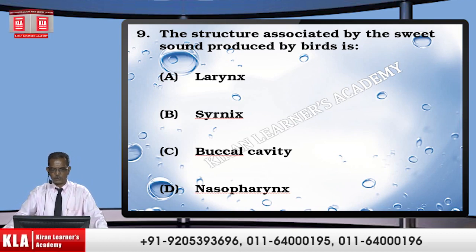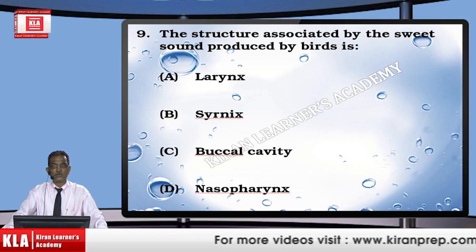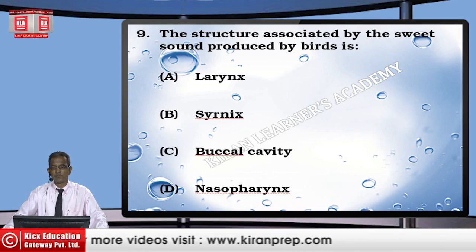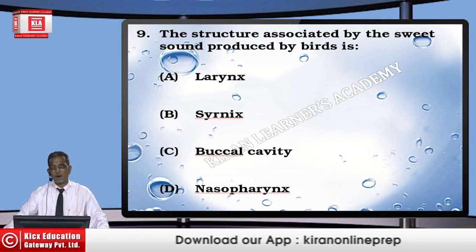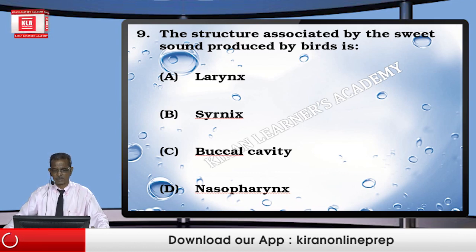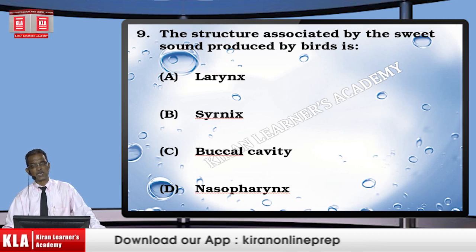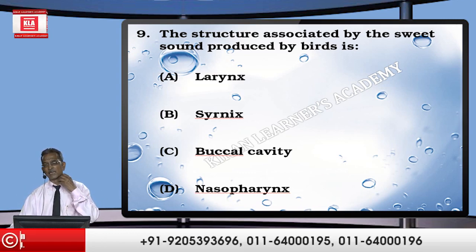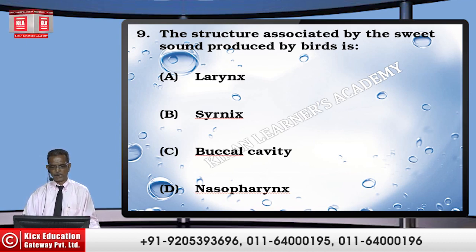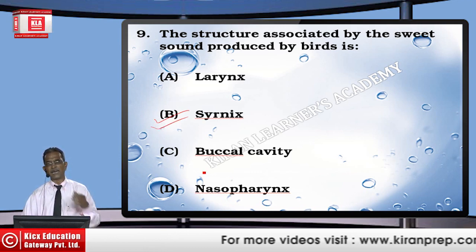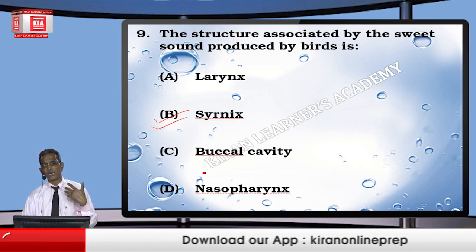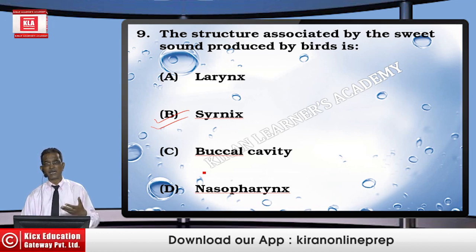Question: The structure associated with the sweet sound produced by birds — which part of the body helps them produce that melodious sound? Larynx is the structure that produces sound but may or may not produce sweet sounds. The buccal cavity is the mouth. Nasopharynx has nothing to vibrate. In birds it is the syrinx — in the larynx region there are modified structures that cause the sound to vibrate in a way that makes it more melodious and sweet than the harsh sounds in humans.